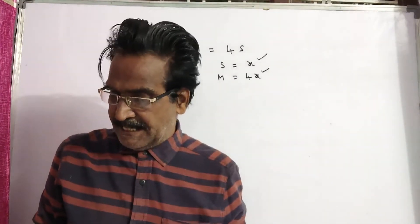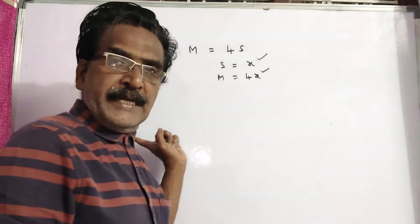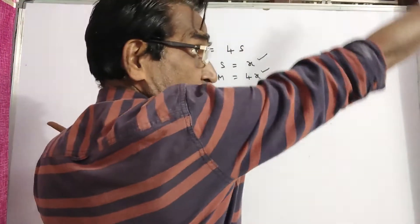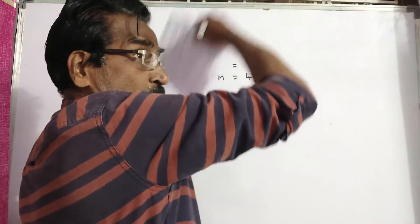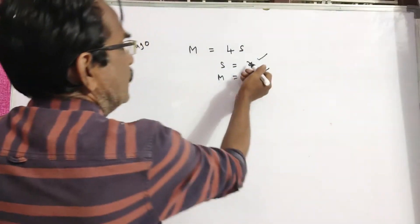After 6 years, after 6 years means one year ago to after 6 years. One year ago to after 6 years means 7 years.